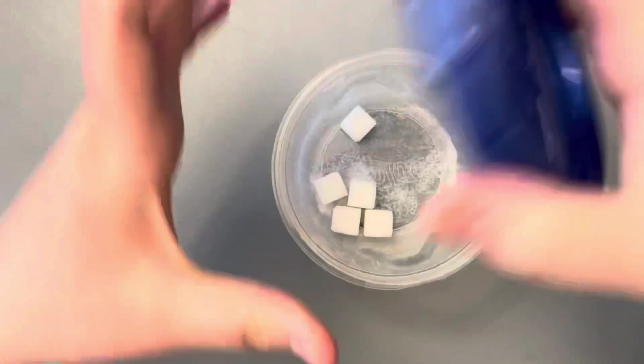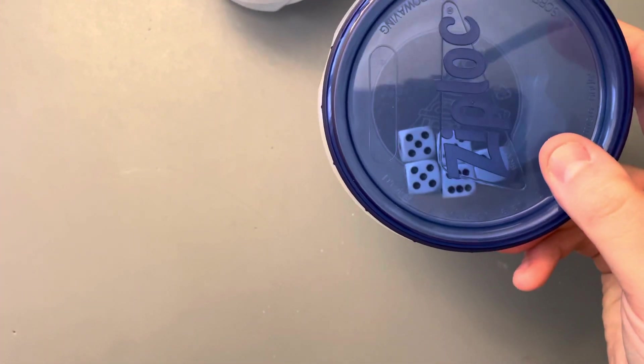All right. So now just like we did this one, let's do this with the dice. All right. 25 shakes. Counting: 1, 2, 3, 4, 5, 6, 7, 8, 9, 10, 11, 12, 13, 14, 15, 16, 17, 18, 19, 20, 21, 22, 23, 24, 25, 26.